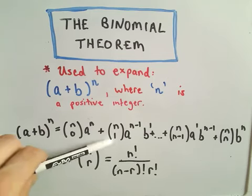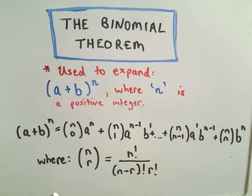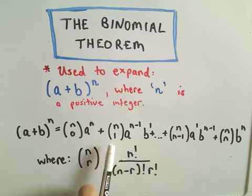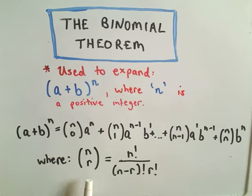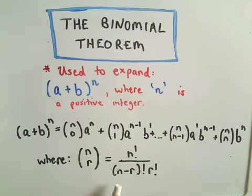First, the formula's coefficients use factorials — that's what the exclamation marks are called. Second, the binomial coefficients, the numbers in front of the variables, use what are called combinations, written as n choose r. You just need to know the formula and be able to work with factorials. There are a couple of ways to find these coefficients. A calculator can do it; most graphing calculators have a key for combinations and permutations.